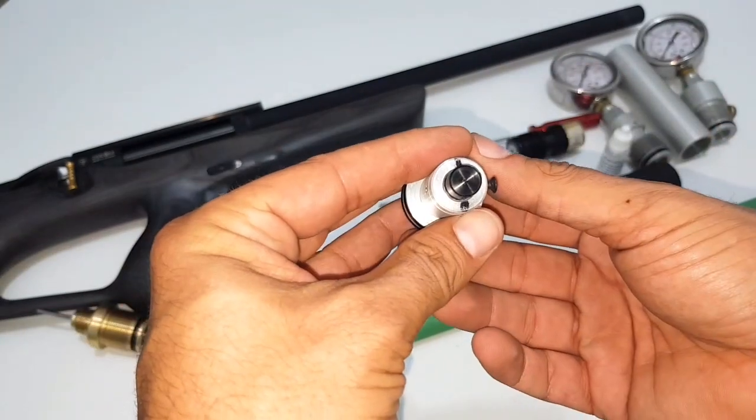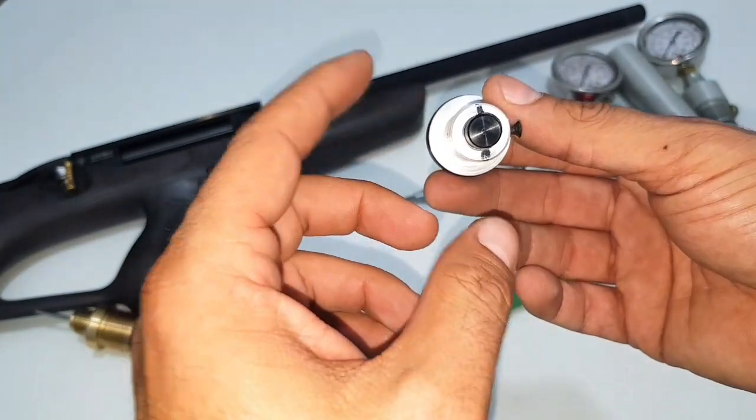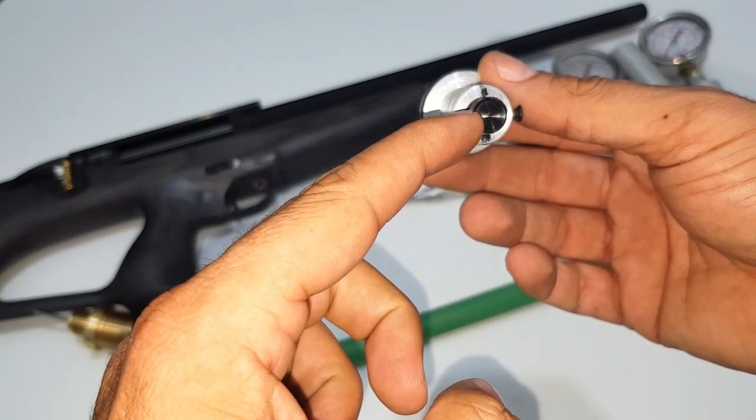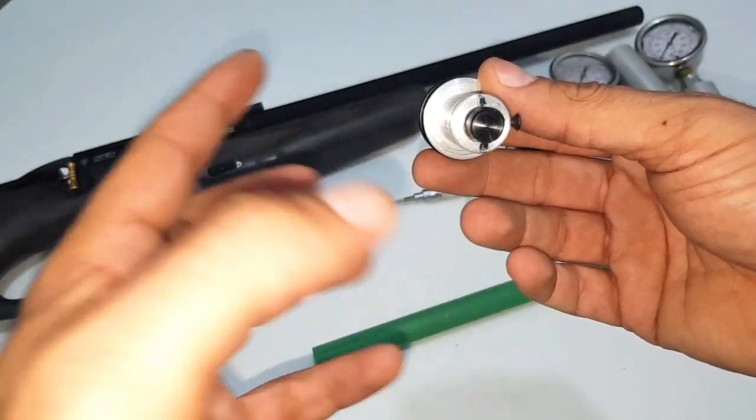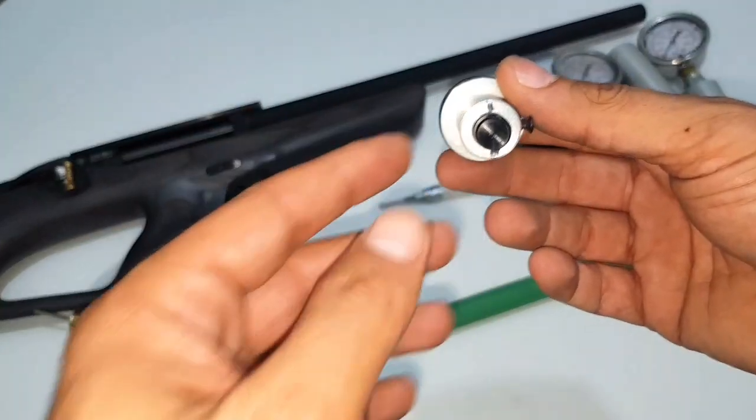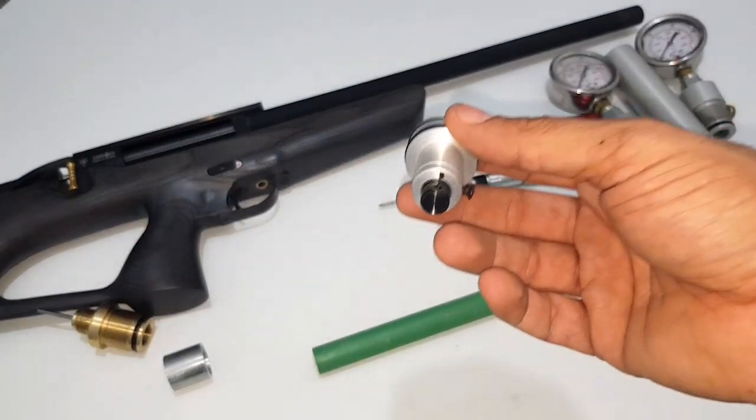By unscrewing it, we will be able to adjust this part clockwise or counterclockwise. If you see that there's a factory marking here, I guess most of these Zbroya regulators for the 22 calibers come adjusted. The factory settings is at I think 140 to 160 bars, and that's why I will be testing this regulator at what pressure it was set in the factory.